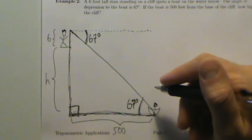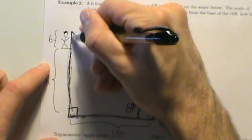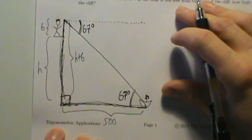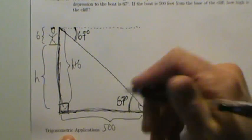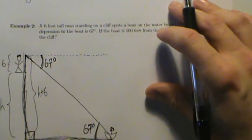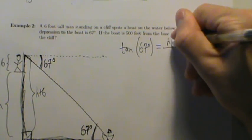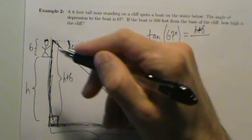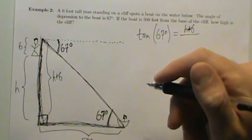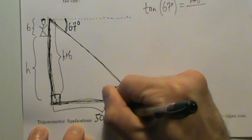So now this angle inside the triangle is 67 degrees, and the opposite side is h plus 6 — if the cliff is h and the man is 6 feet tall, the whole thing is h plus 6. The adjacent side is 500. So we can use tangent: tangent is opposite over adjacent. The tangent of 67 degrees equals h plus 6 divided by 500. It's the whole side h plus 6, because the 67 degrees is inside this big triangle going all the way up.